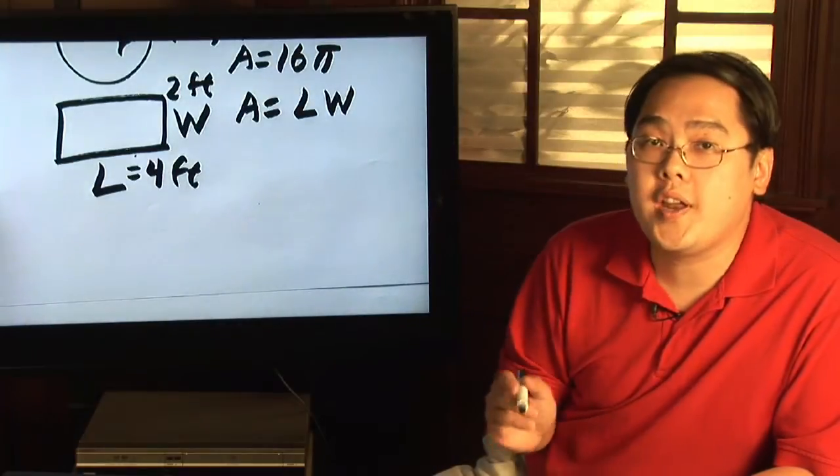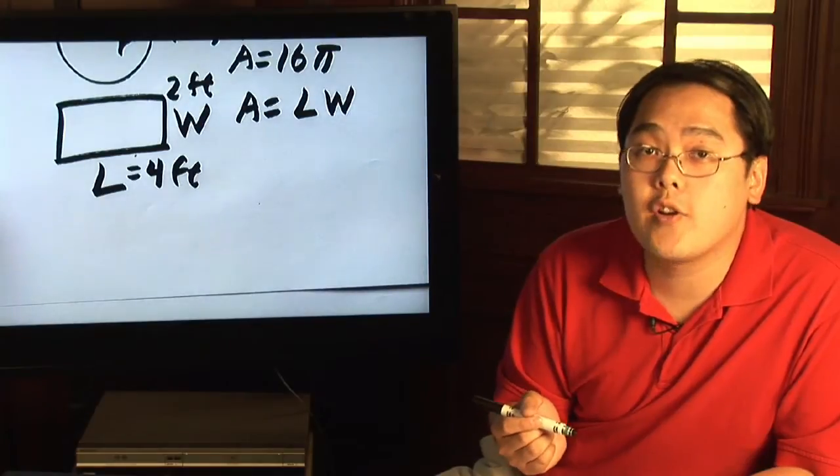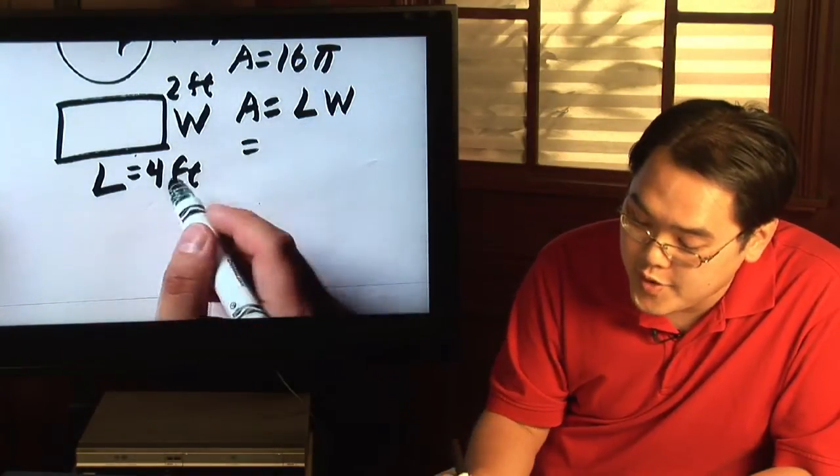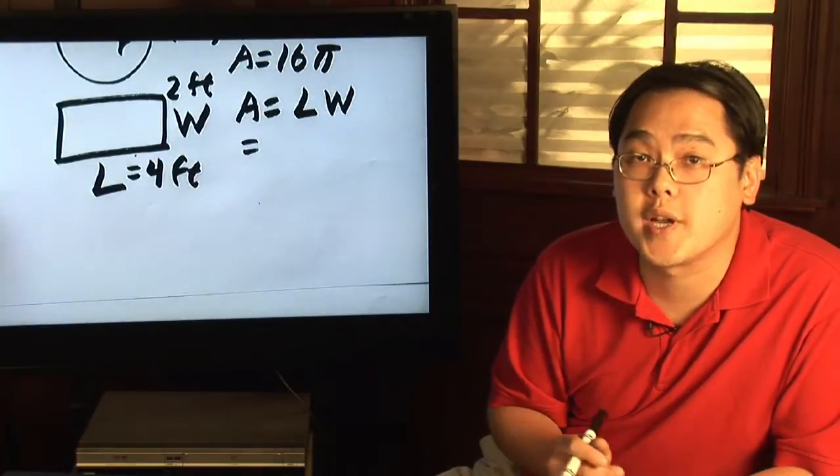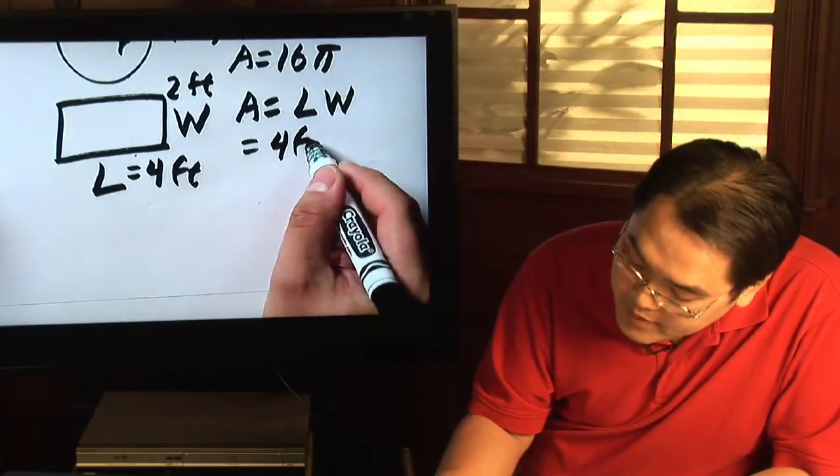Now, one thing in the area you definitely want to keep in mind is the area is always measured in square units. So in this particular case, when you plug in the numbers, you also want to include the respective units. So length is four feet, width is two feet.